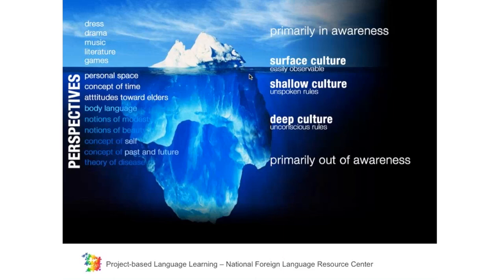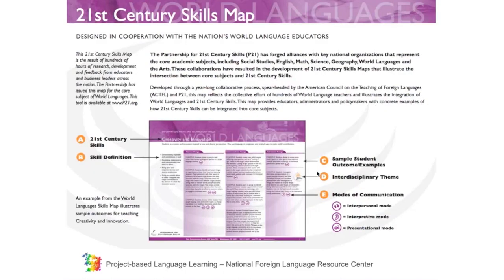The iceberg metaphor has appeared a number of times. The things that are easily visible to us are above the surface of the water — big C and some little C practices are fairly apparent to us. The things that are not apparent are notions and concepts. As we go down, we see notions of modesty, notions of beauty, concept of self, concept of past and future. These things vary culturally, but they're not very accessible to us because they belong to deep culture — they're primarily out of awareness. The way we can observe these things is through a process of comparison.